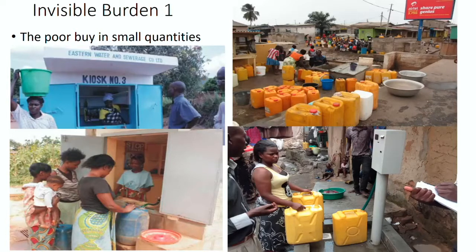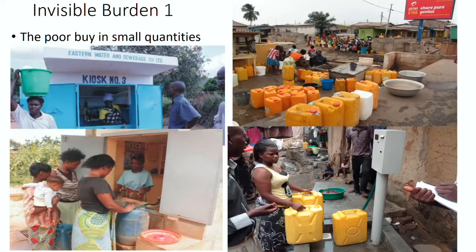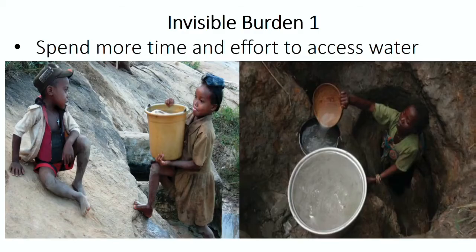The size of the burden depends on how water is accessed. If water is accessed through a formal service provider, the burden reduces. But through informal water vendors, the burden can be ten times higher. Those who buy every day in small quantities — paying 20 cents per container — are actually paying more per unit of water than those paying a monthly bill. That's one form of invisibility.